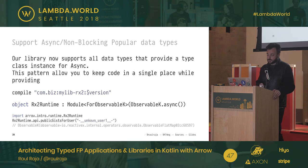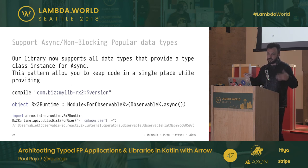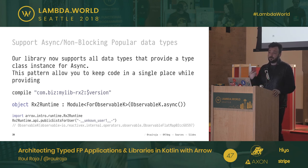For Rx2 Observables we do the same thing. Arrow also handles flatmapping through Observables where libraries have different strategies like `concatMap` and others to hint at the runtime about concurrency scenarios. We have different Monad instances for the different Monad-capable data types that Rx2 supports as well.